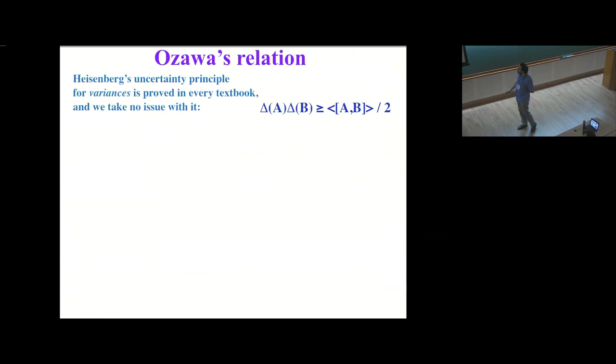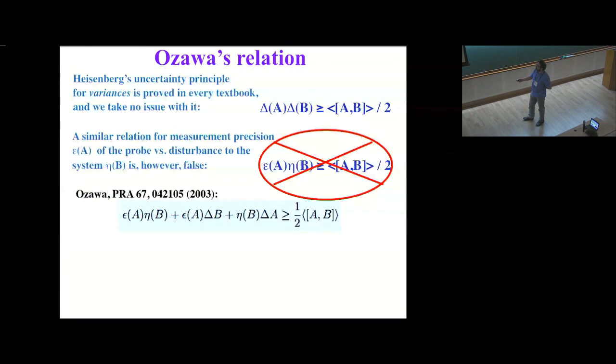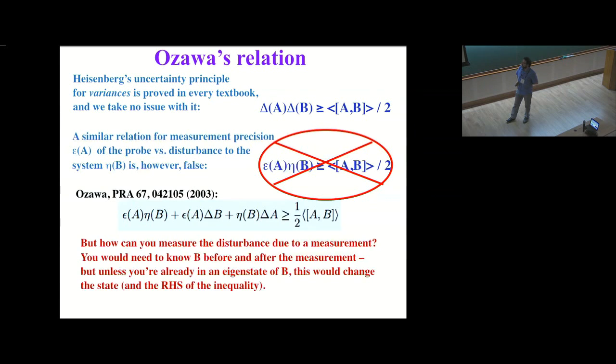So there have been a number of theoretical works on that. And I think that this began with Masanao Ozawa, who proved that although Heisenberg's uncertainty principle for the variances is still correct - we're not taking any issue with that, we've all proved it in our quantum mechanics class - if you reinterpret that as having to do with measurement precision and disturbance to the system, the way we like to talk about it, that's false. There are a few more terms in the inequality. In addition to this epsilon eta, the disturbance precision product, there are two more positive definite terms on the left, which means that you can satisfy Ozawa's proven inequality while violating Heisenberg. The problem about verifying this is you have to measure the disturbance due to a measurement, which means before I measure position, I need to know what the momentum is and then measure what the momentum is again afterwards.